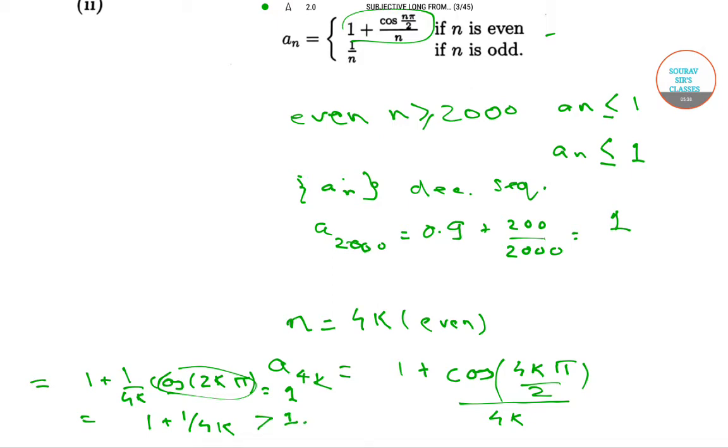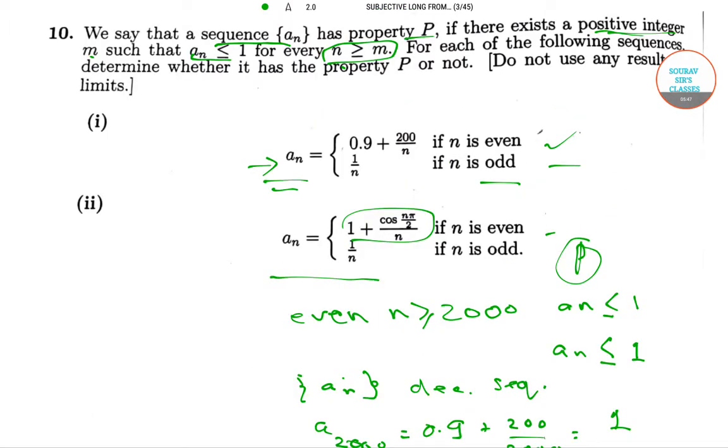So here, the property P does not satisfy. That is, our second sequence does not have the property P.